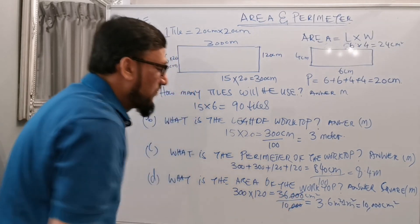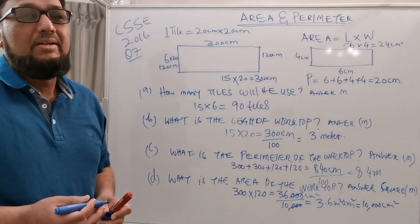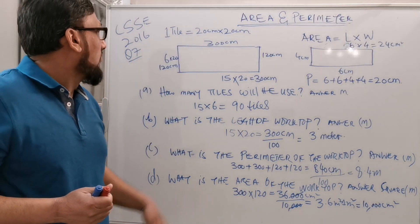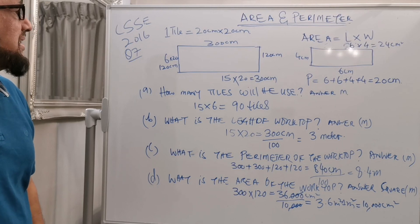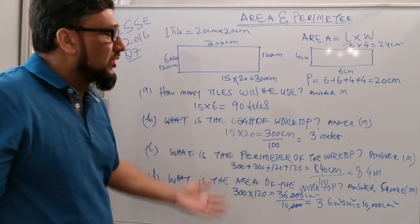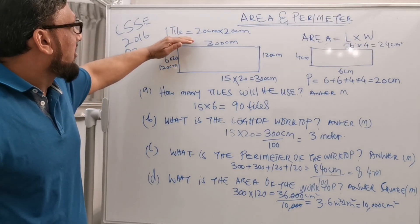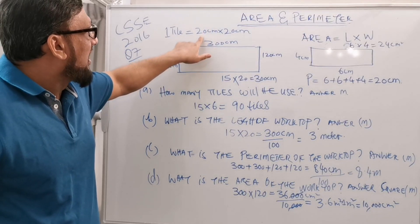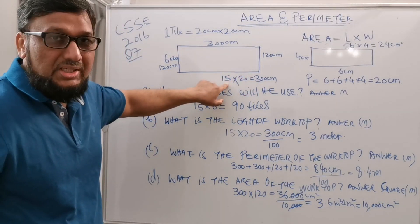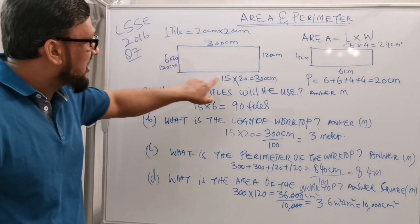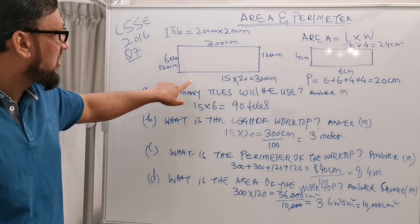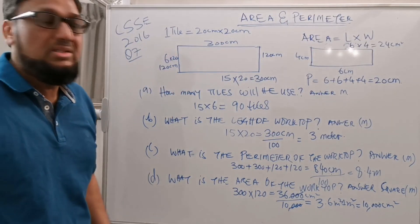This is the area and perimeter question from the 2016 CSSE exam. John was making a worktop using tiles, each 20 centimeters by 20 centimeters. He used 15 tiles for the length and 6 tiles for the width, so 15 times 20 gives 300 centimeters for the length, and 6 times 20 gives 120 centimeters for the width.